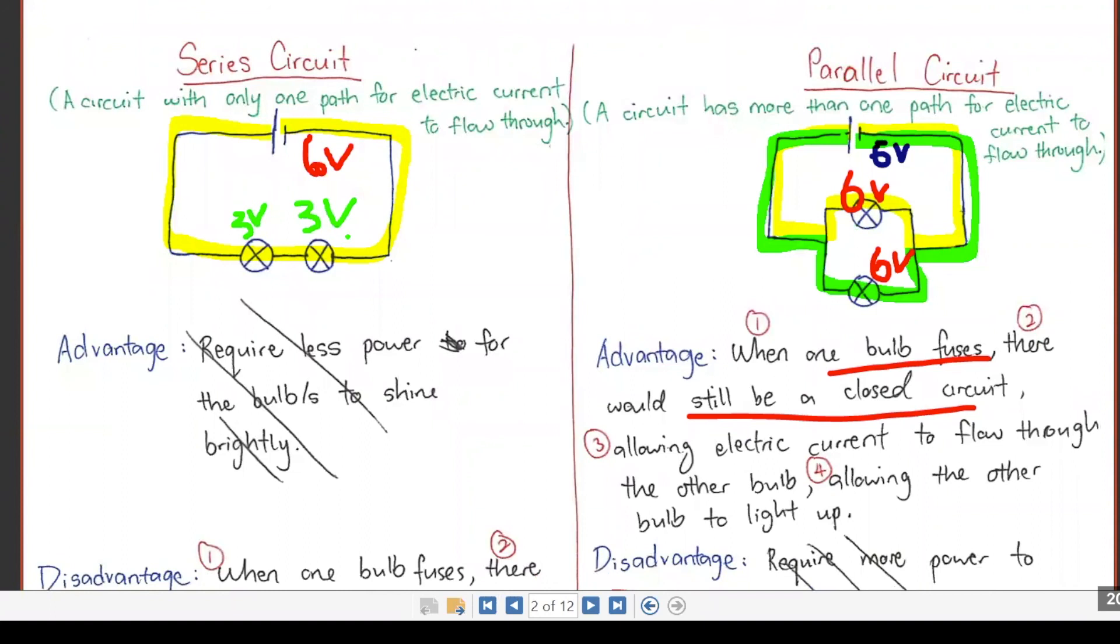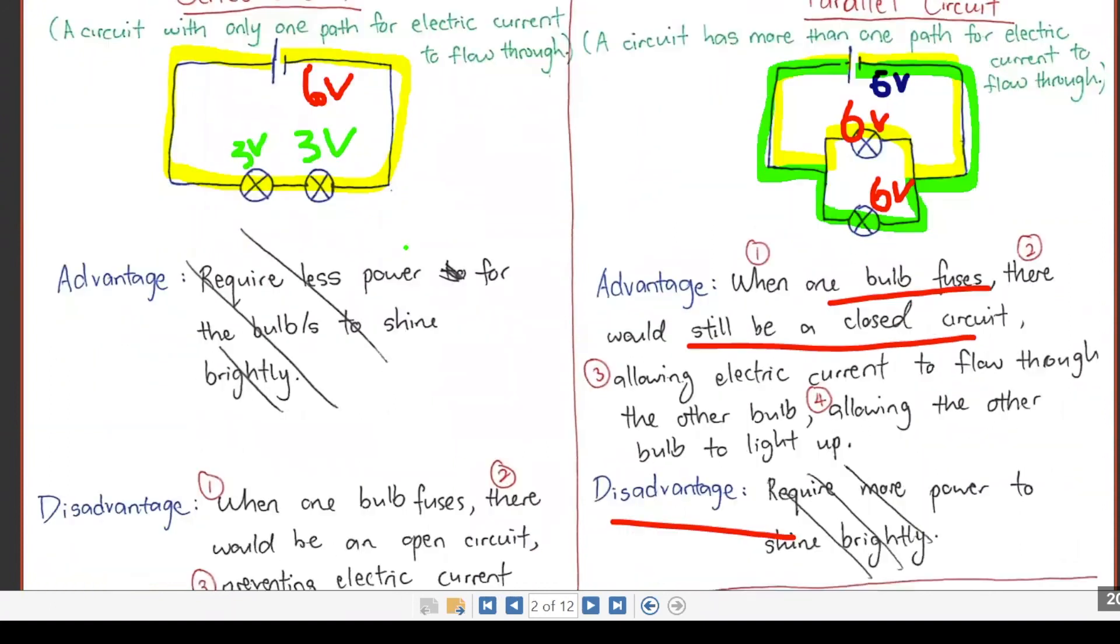This one brighter, the parallel one's brighter. The series one is dimmer. One battery, two bulbs. But I can last longer because it's like you use less power.